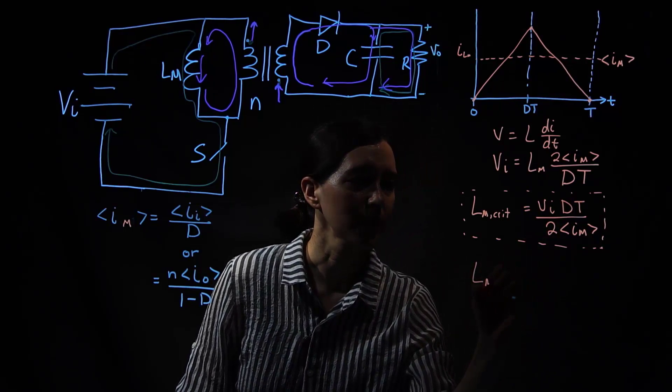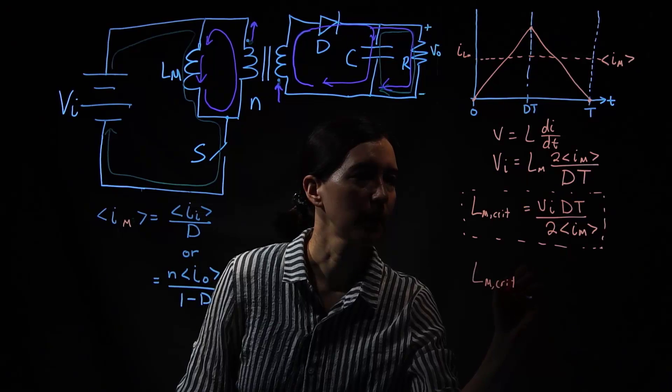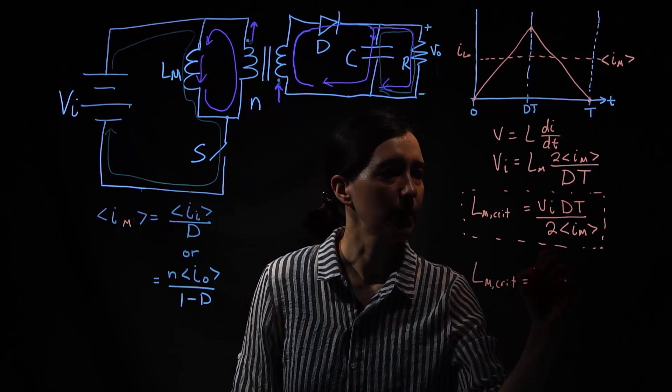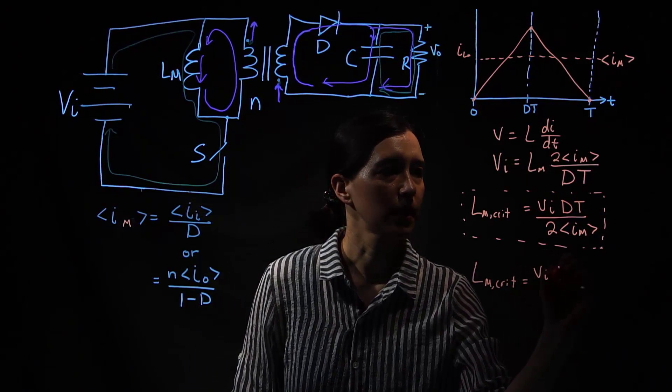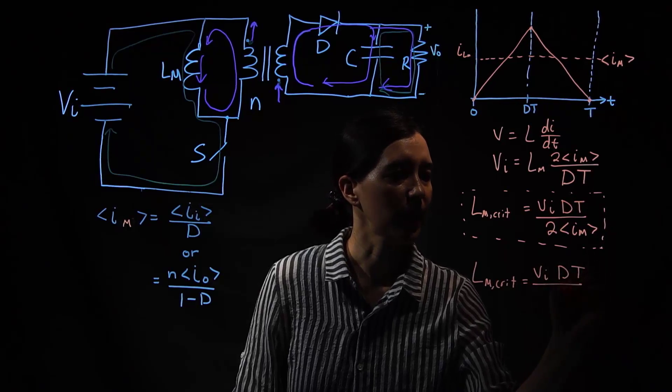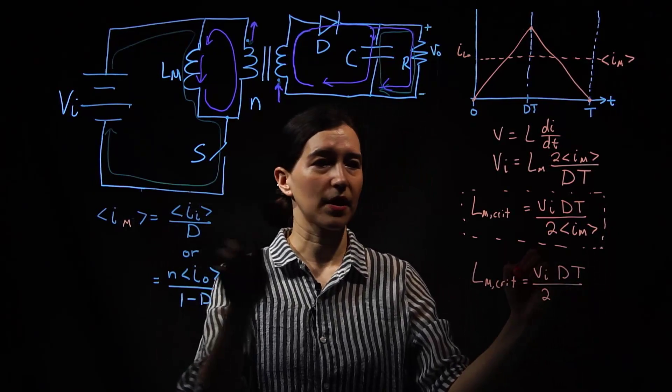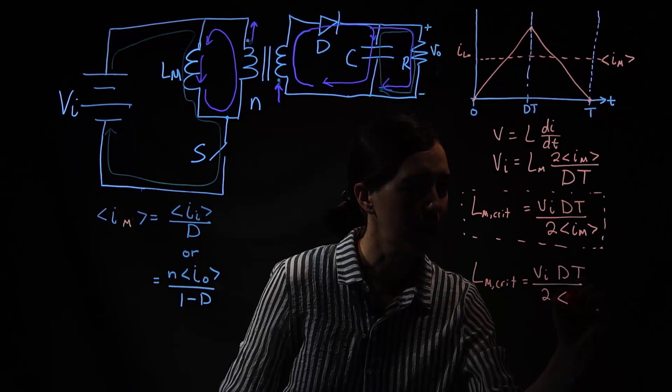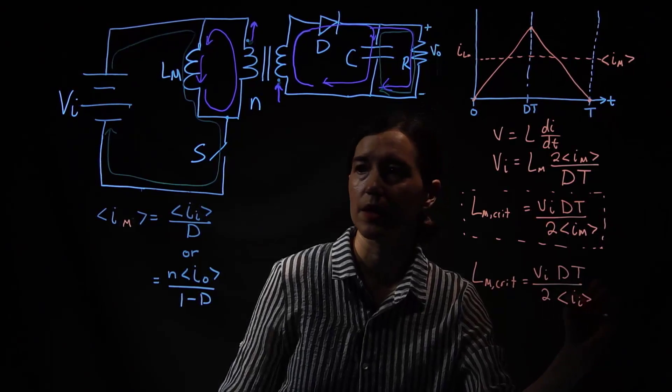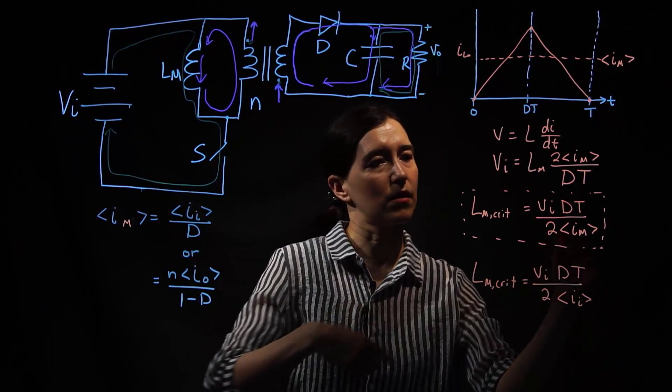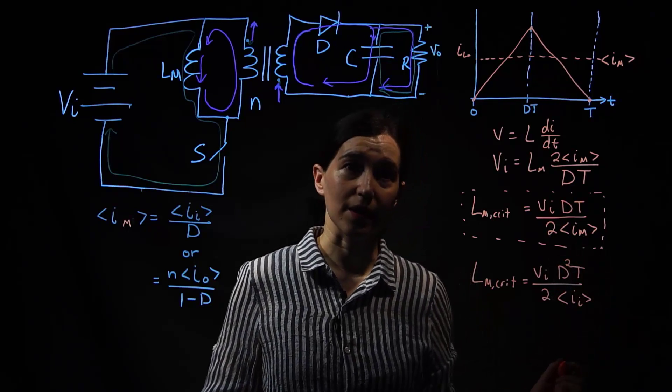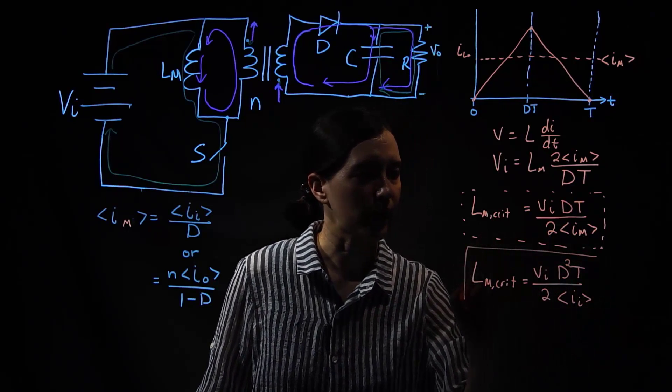So what will we get? Lm critical is equal to input voltage dt divided by two. And now we're just going to plug this guy into there. So I, the input current if you know it, this is divided by d so it's going to end up with a squared here. So this is one of our final answers.